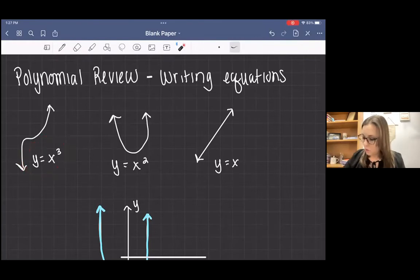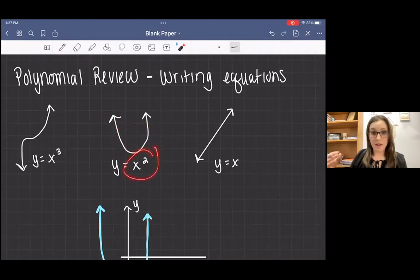Then if you have a quadratic, that's where it's going to kind of bounce off the x-intercept. That's going to follow the x-squared.